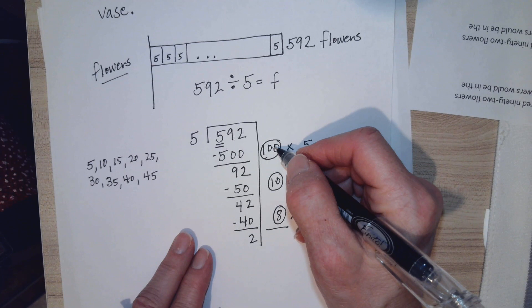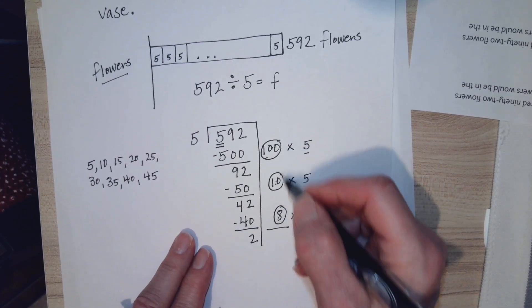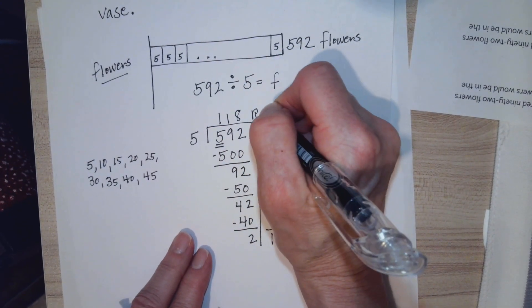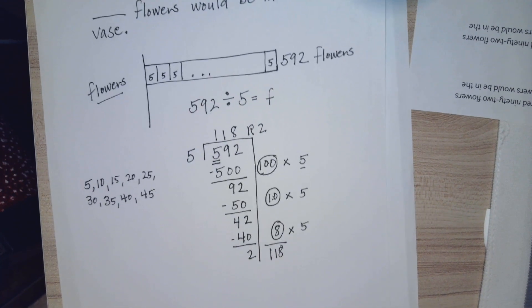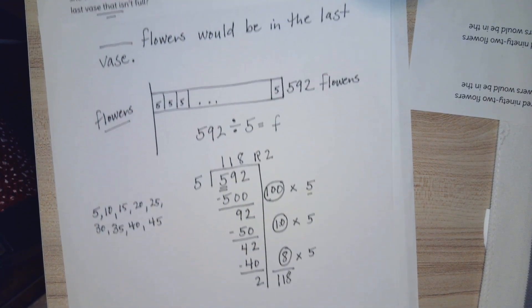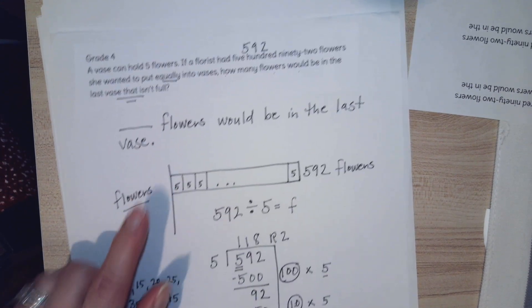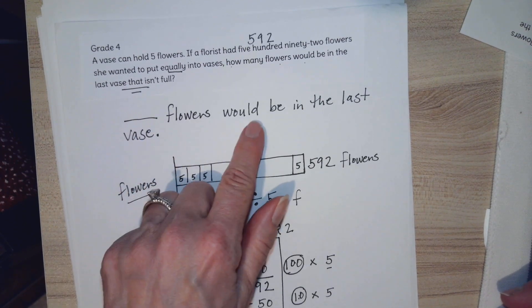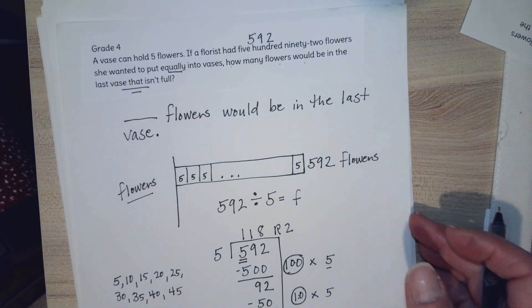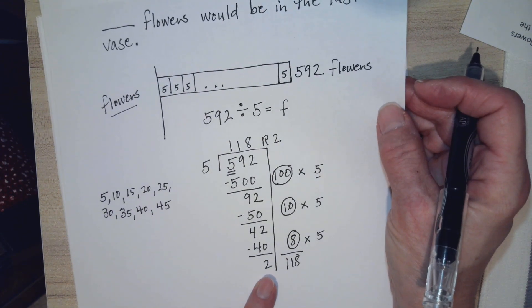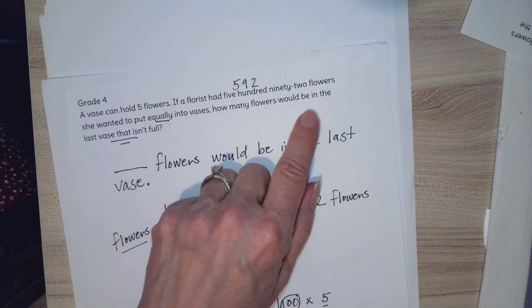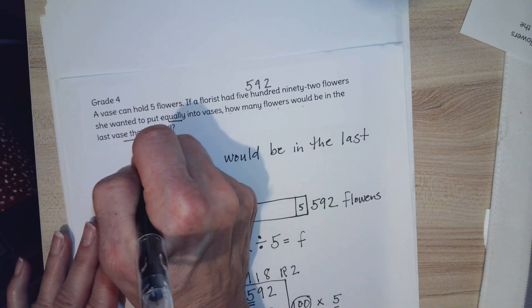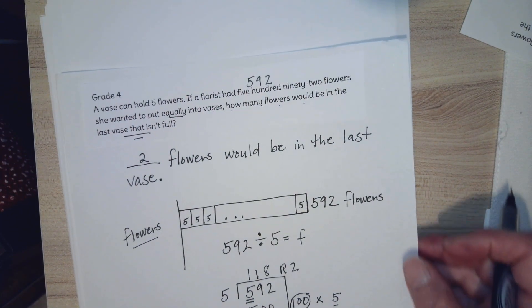Now my quotient is going to be 100, 10, 8 and 118. 118 remainder 2. Now is that the answer to my question? This is where you have to be careful. That remainder, you're going to have 2 leftover flowers that would be in the last vase that isn't full. 2 flowers would be in the last vase.